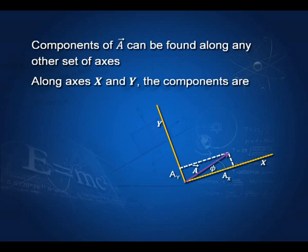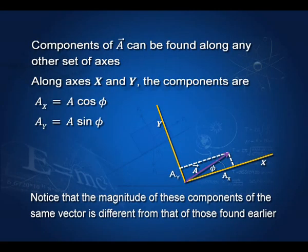It is not necessary that the axes are as shown in the last diagram. They can be tilted, and we can still find the components of vector A along the tilted axes X and Y. The angle between them is phi, so A X equals A cos phi and A Y equals A sin phi. You must note that the components are not always equal — components along one set of axes may not equal the components along another set.